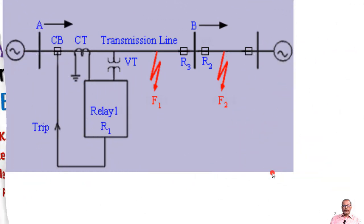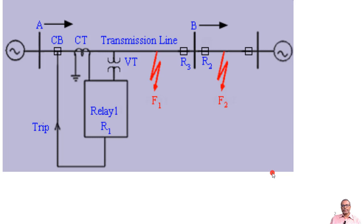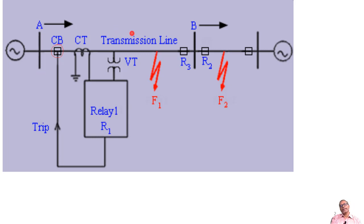We have already seen this figure showing a typical protection arrangement, where we have CTs and PTs feeding the current and voltage signals to the relay. The relay compares the measured value with the threshold value and then sends the trip command to the circuit breaker. The relay gives the trip signal to the circuit breaker, and the circuit breaker acts accordingly — it makes and breaks the circuit. This is the control mechanism behind making and breaking the circuit on a transmission line.